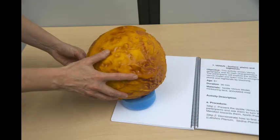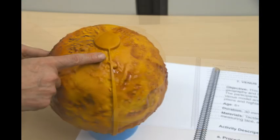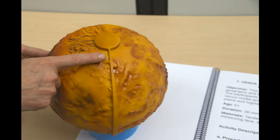Another example, Ishtar Terra, is the region crossed by the meridian next to the North Pole. It hosts the Maxwell Montes, which are very easy to find because they are crossed by the meridian in the model.